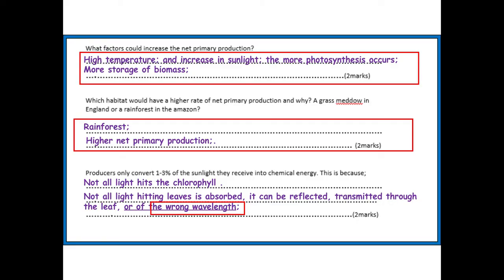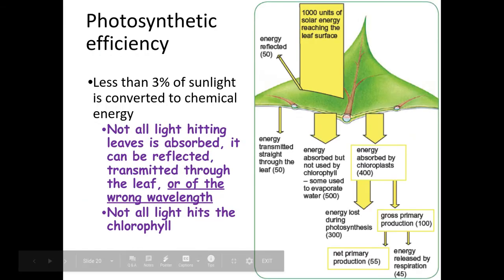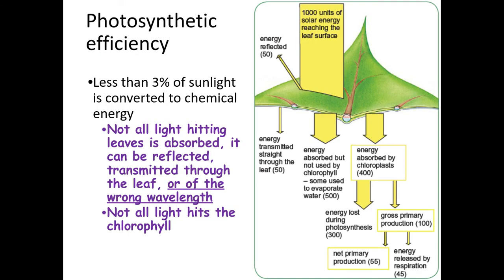Only one to three percent of sunlight received by the leaf is actually converted. This is because not all of it hits a chlorophyll — some goes straight through the leaf, some is reflected, and some might be the wrong wavelength of light. Please recap your physics knowledge on the wavelengths of light and what colours correspond to short and long wavelengths.